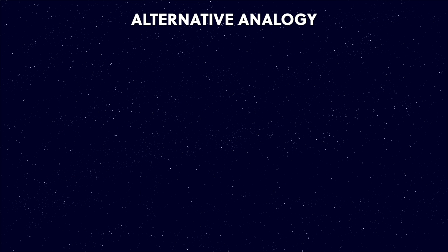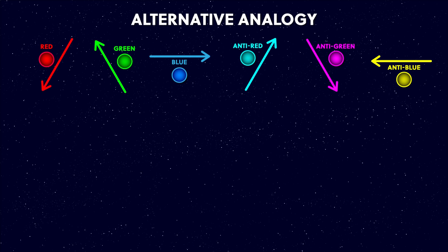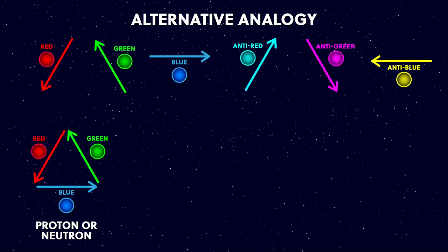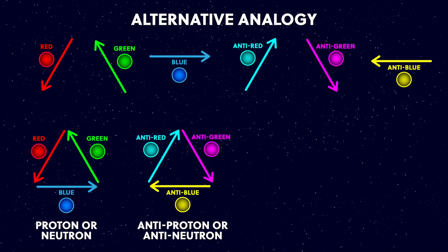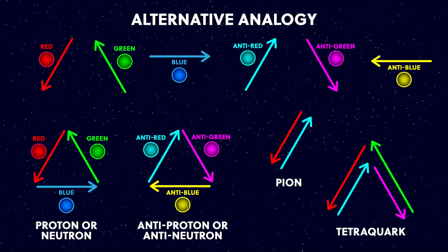There's actually an alternative analogy to the colour charge thing which I quite like. Instead of colours, we've got arrows that always point in specific directions. To have red colour charge means to point in a specific direction and no other — these arrows can't be rotated. A valid combination of quarks is one where the quark arrows make a closed path. So a proton or a neutron would look like an equilateral triangle, an anti-proton or anti-neutron would look like this, and we can extend this out to other shapes like a pion or a tetraquark. Any other shape you can come up with which makes a closed path is also possible.